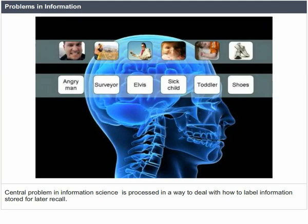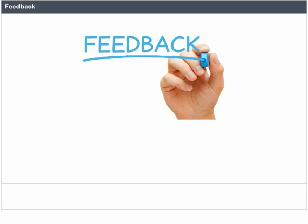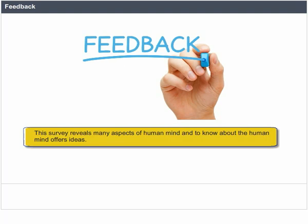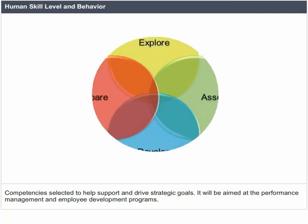A central problem in information science is how to label information stored for later recall. By examining how human memory operates, we can gain some insight into possible skills. This survey reveals many aspects of the human mind and offers ideas to exploit mental capacities in designing the use of information systems.